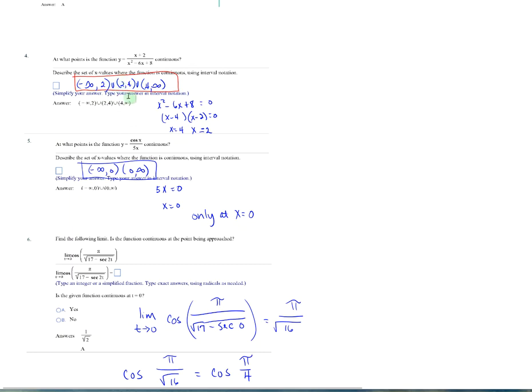Have a union, then from 2 to 4, and then from 4 to infinity. That says it's continuous everywhere except at the points 2 and 4. That's why we have the parentheses there.